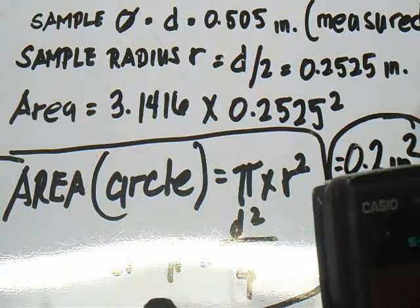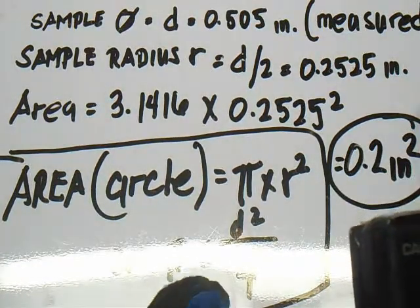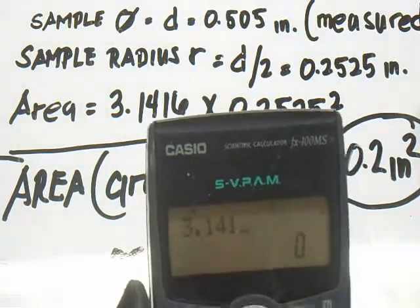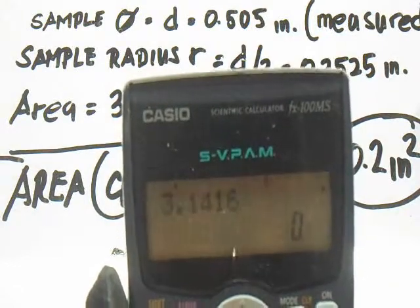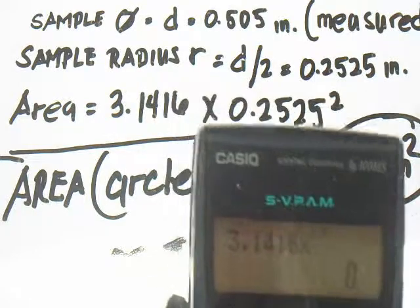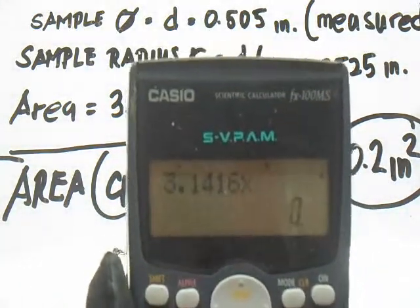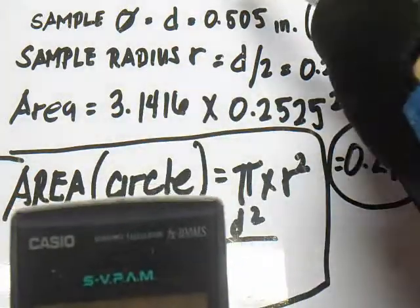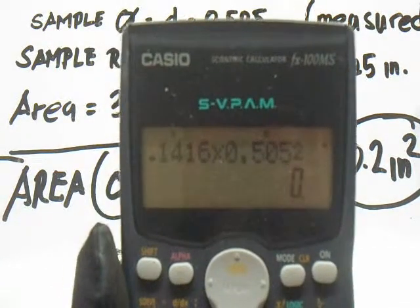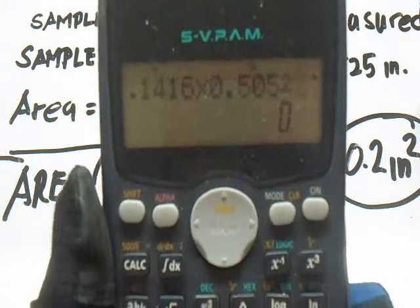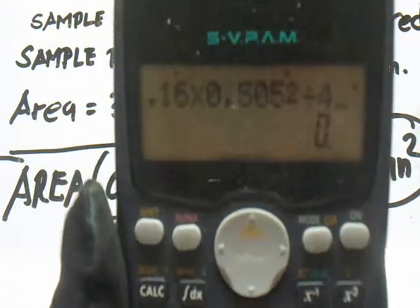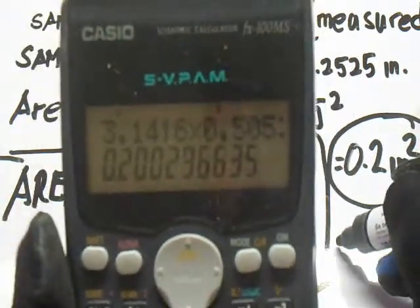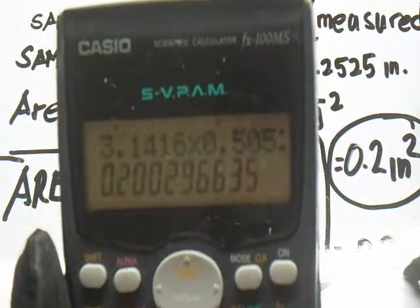Now let's use another formula: pi multiplied by d squared over 4. So 3.1416 multiplied by 0.505 squared, divided by 4. Look, they are the same answer — 0.2 inch squared. Awesome!